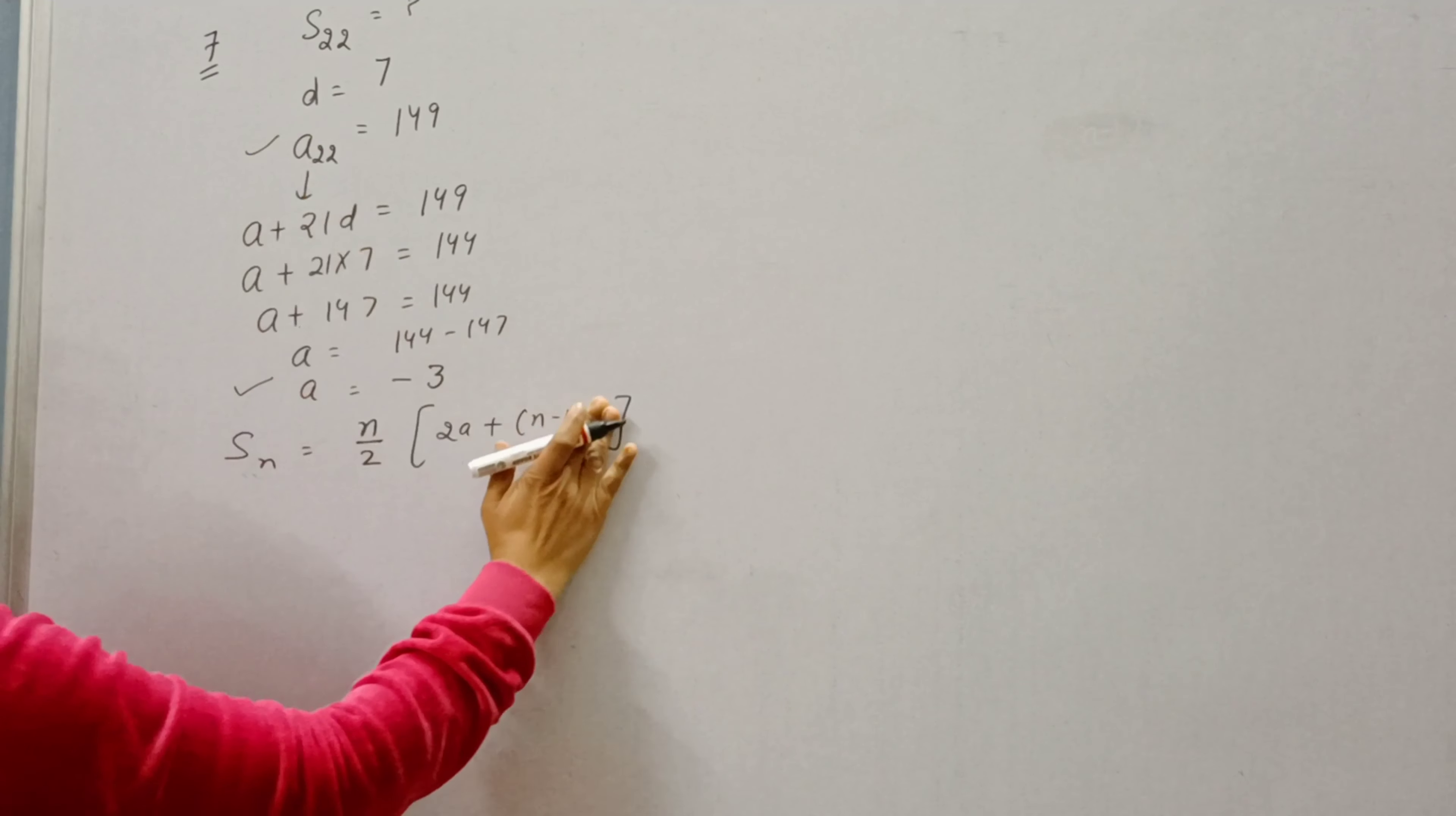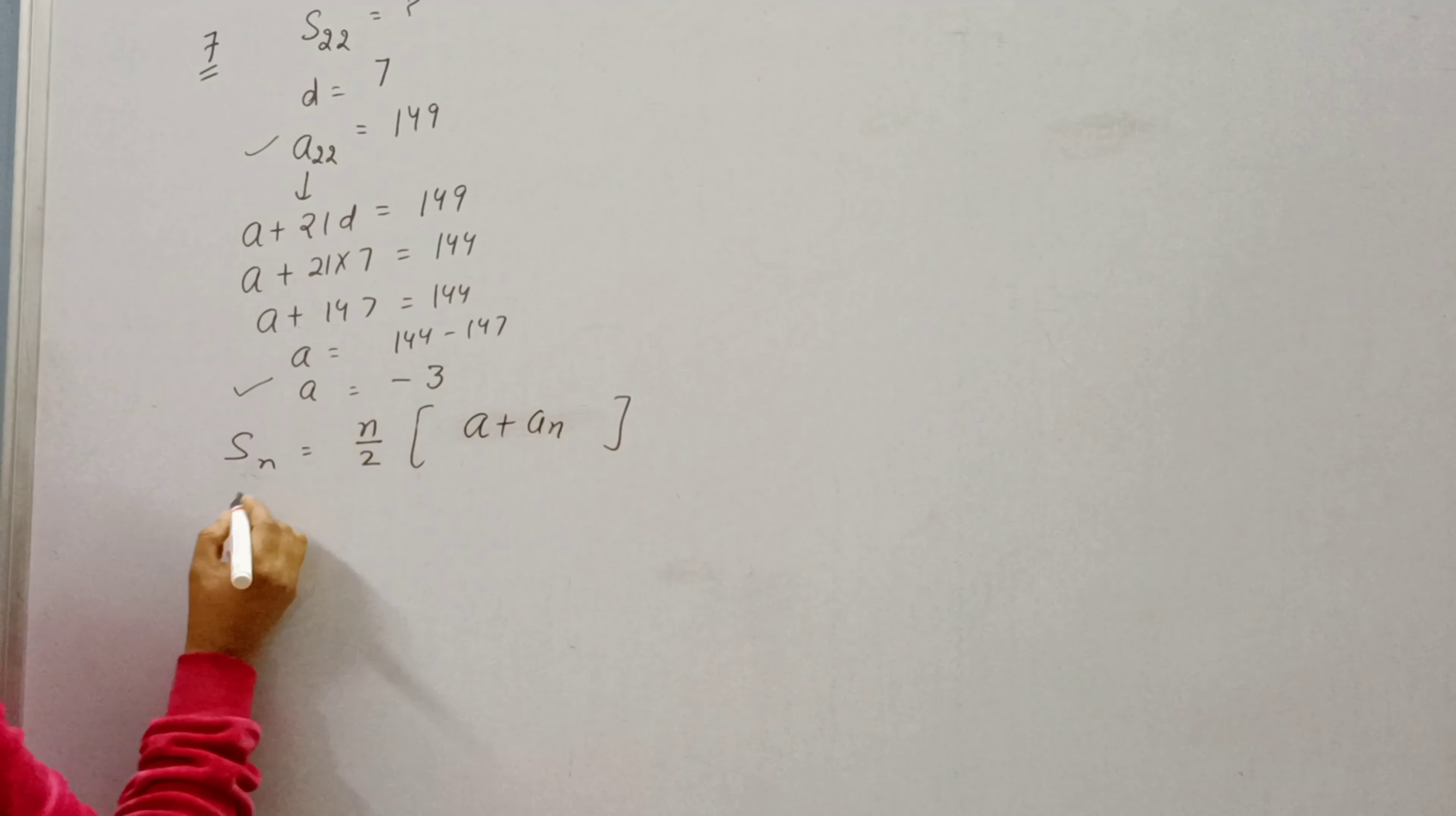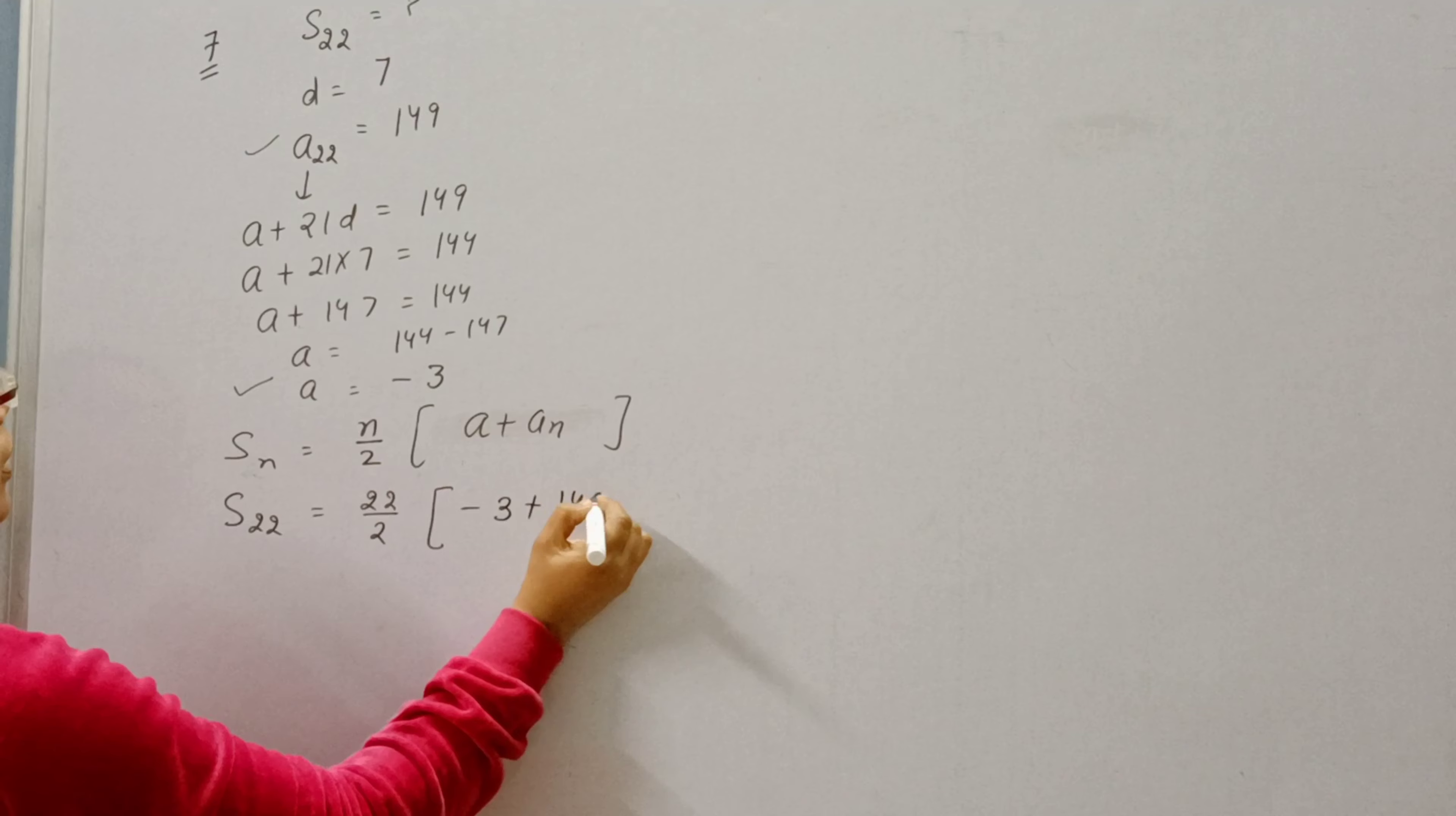AN is known to us, so we can simply apply A plus AN. So SN is 22, N is 22, A is minus 3 and AN is 149.